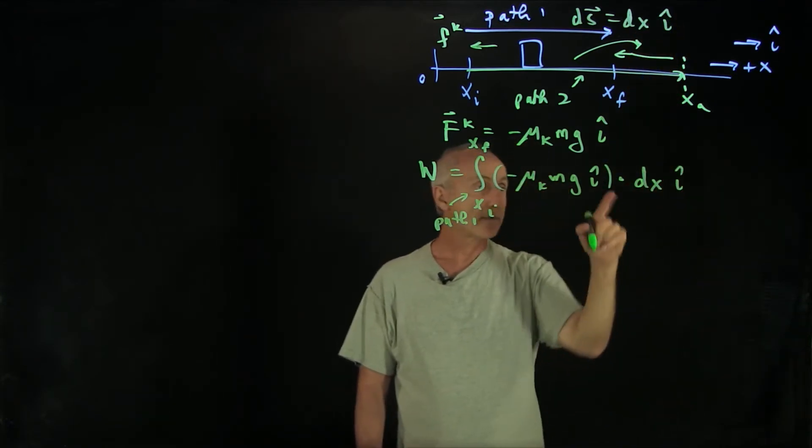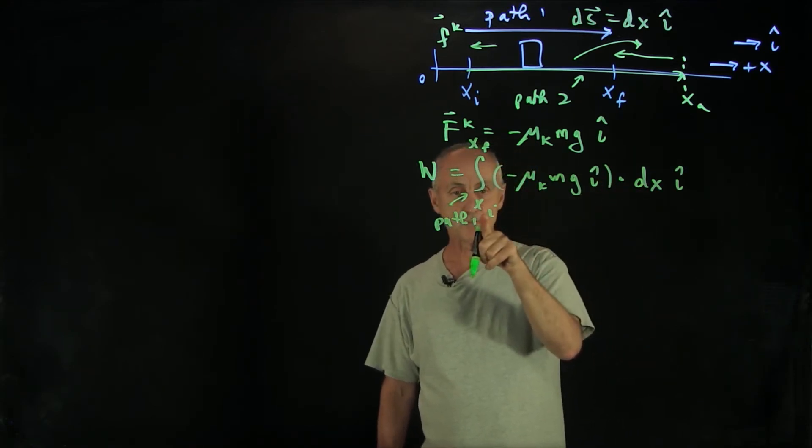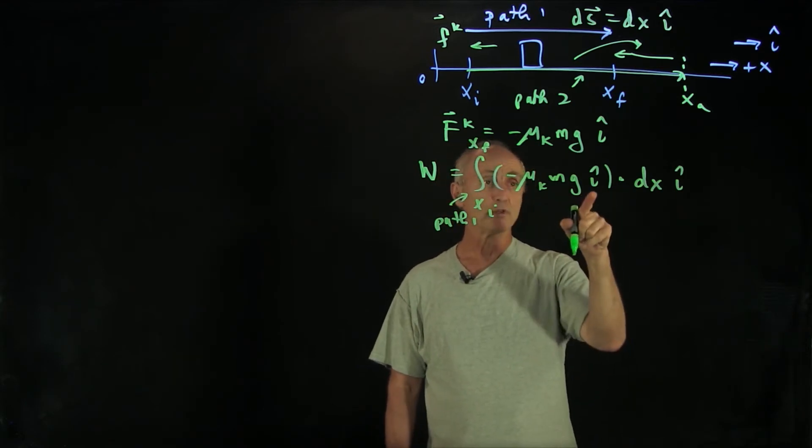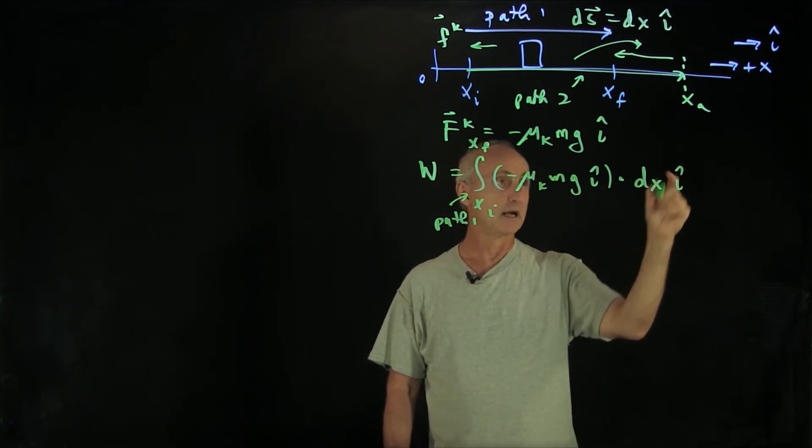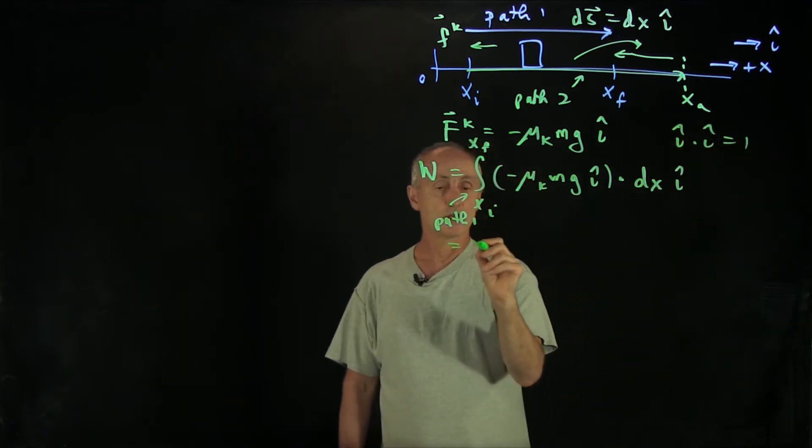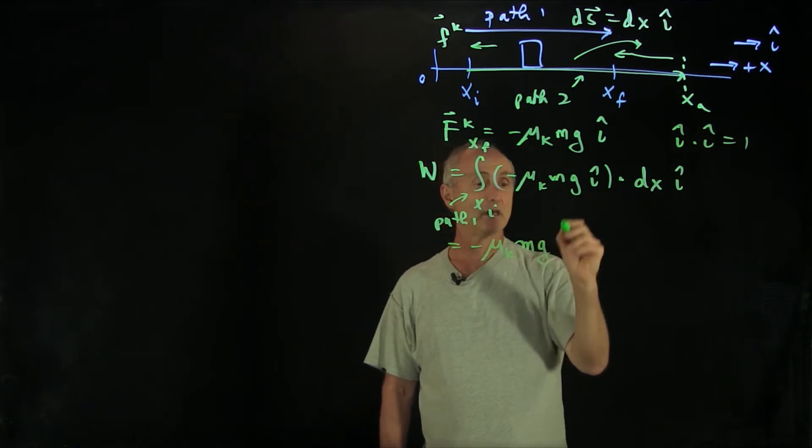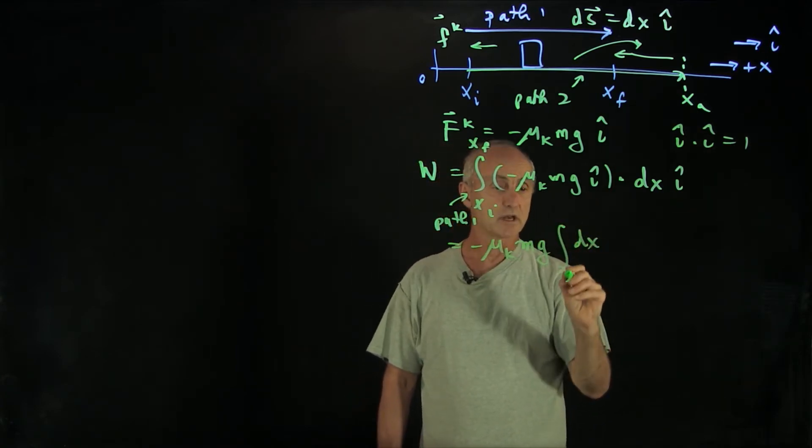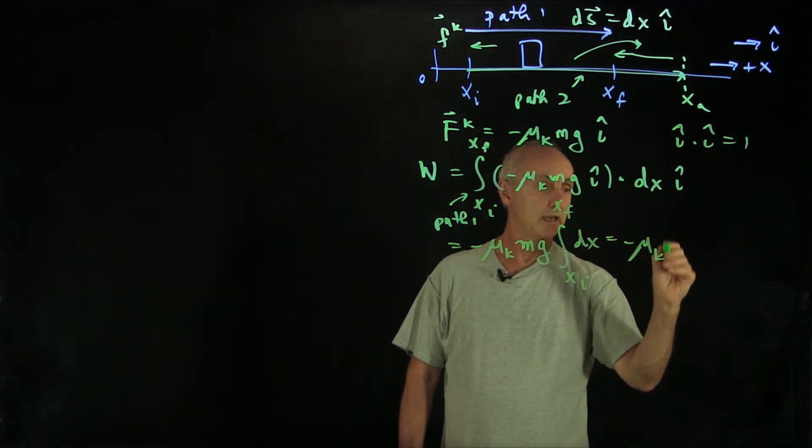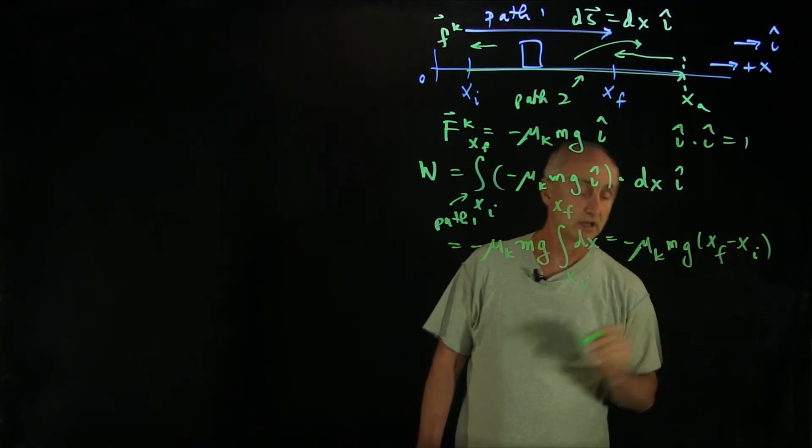Notice we're not putting any sign into dx. The sign will show up in the endpoints of our integral. When we do the dot product here, we have i hat dot i hat, that's one. So this integral, we can pull out all the constants, μ_k mg. We're just integrating dx from x_initial to x_final. And so we get minus μ_k mg times (x_final minus x_initial).